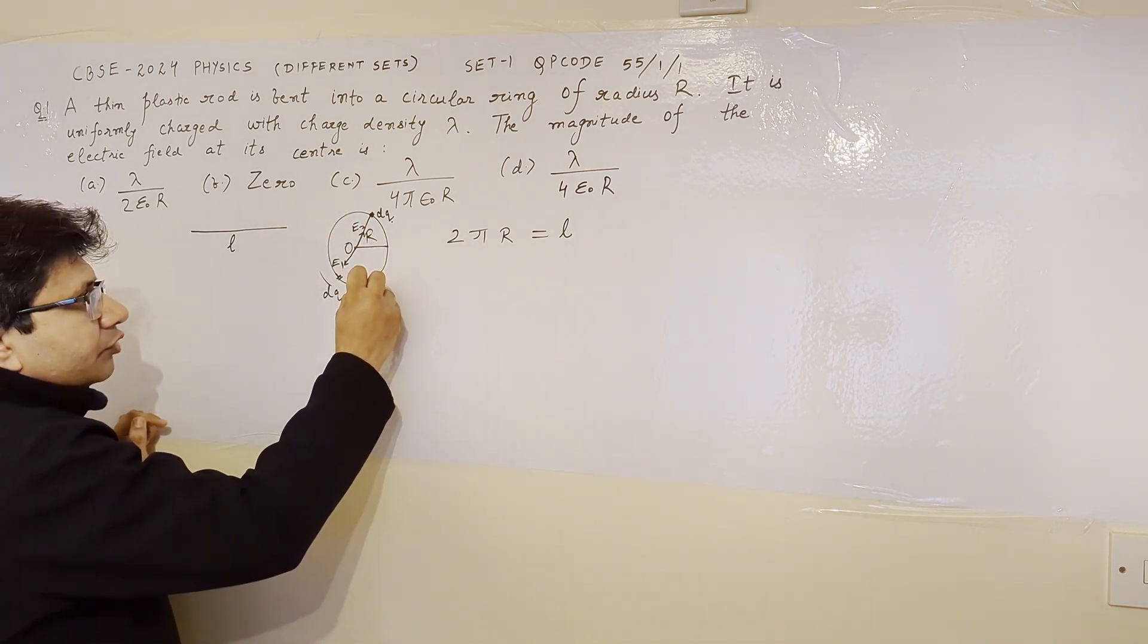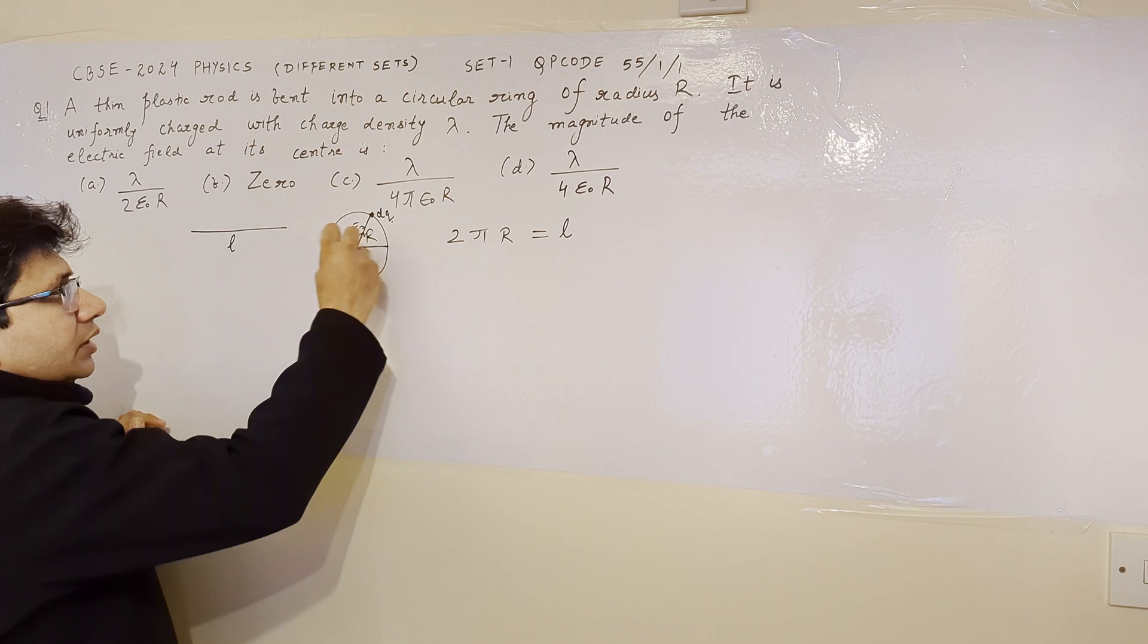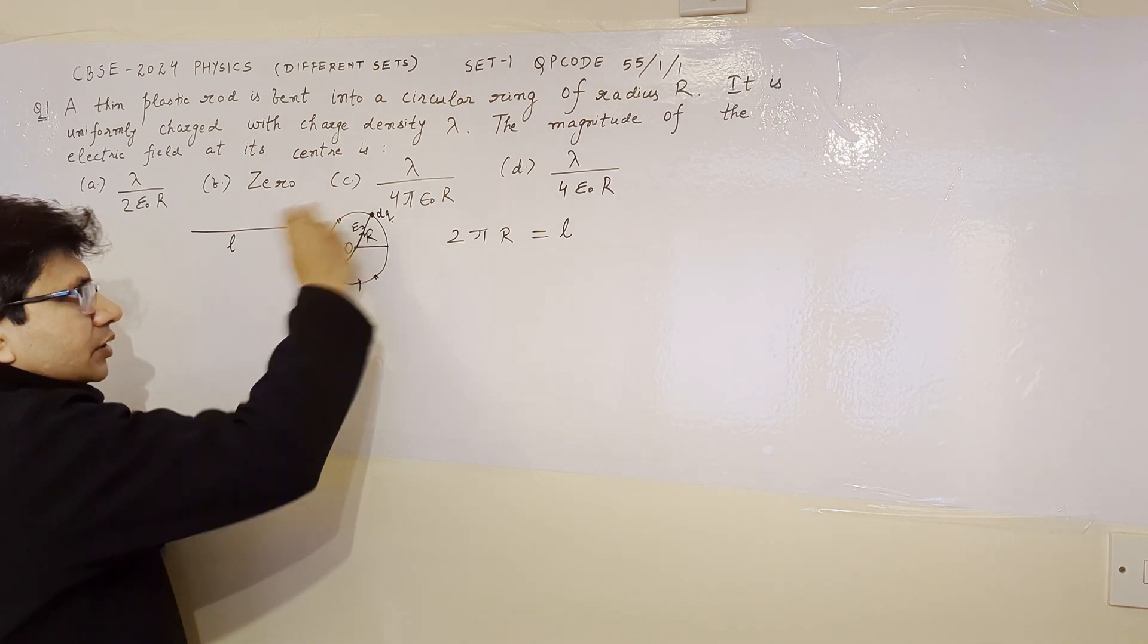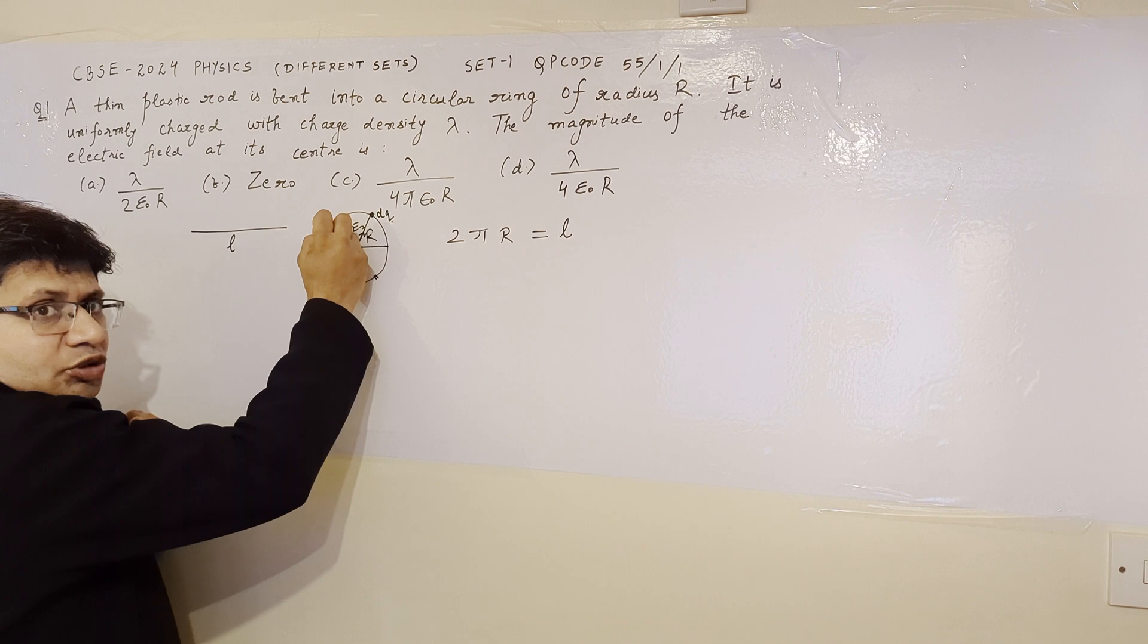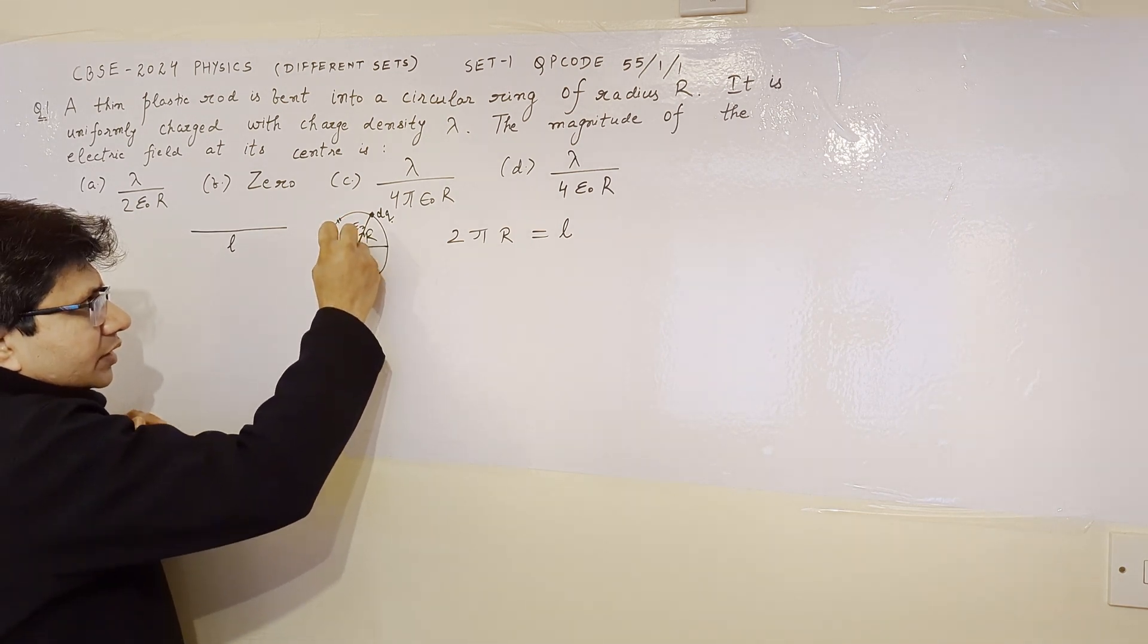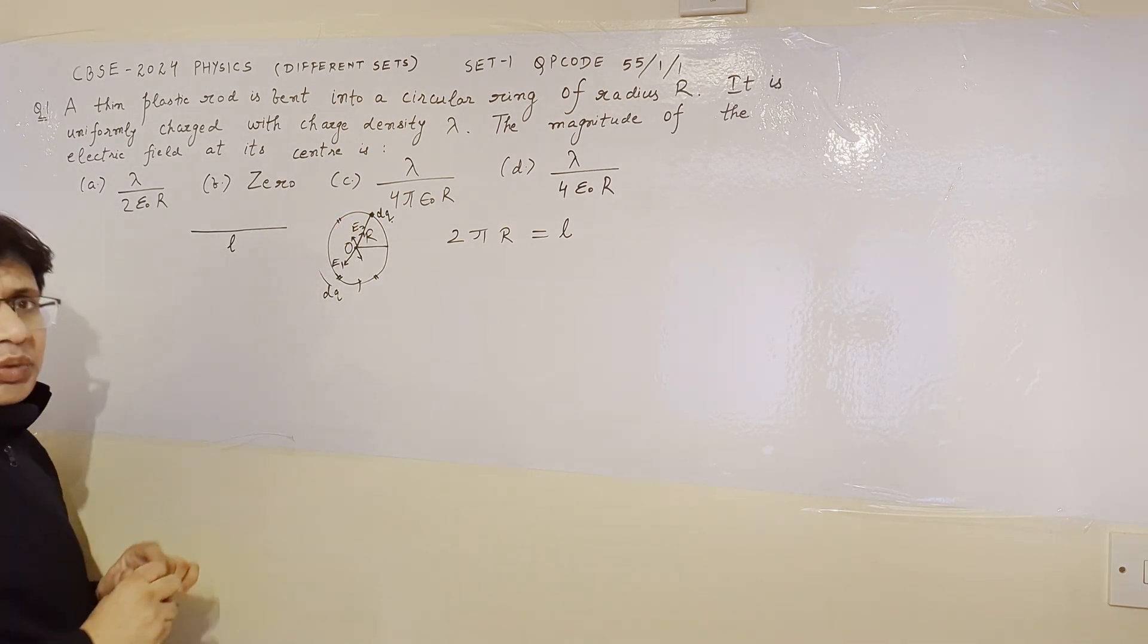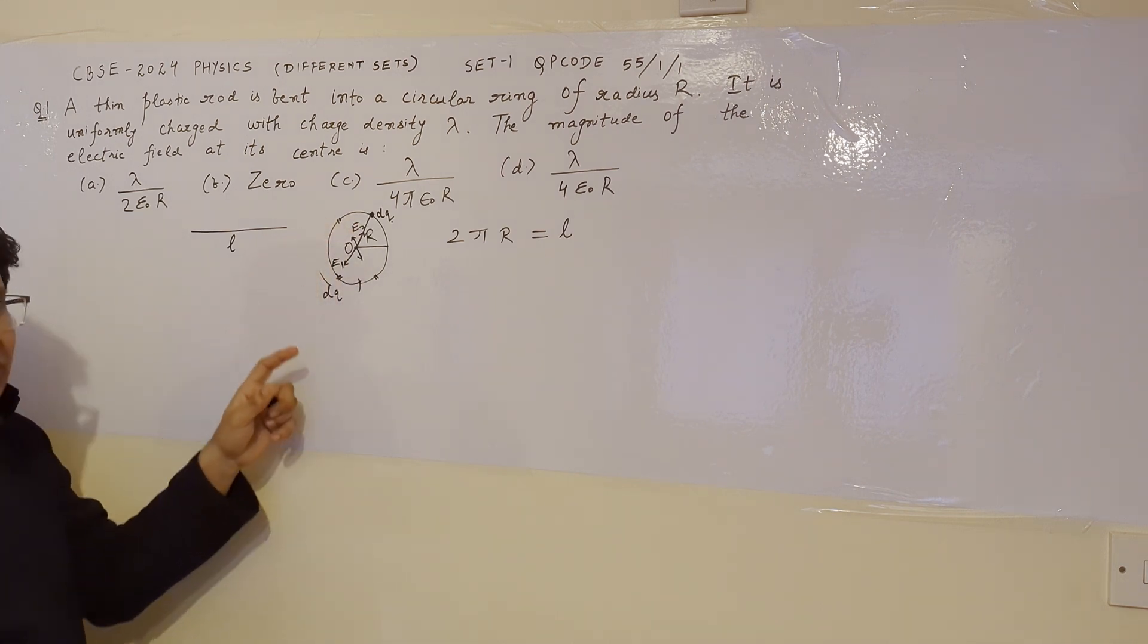In a similar manner, if we take a small element here, then there must be a small charge element at the diametrically opposite end which cancels the electric field at the center. In this way we can say that there is a kind of symmetry.